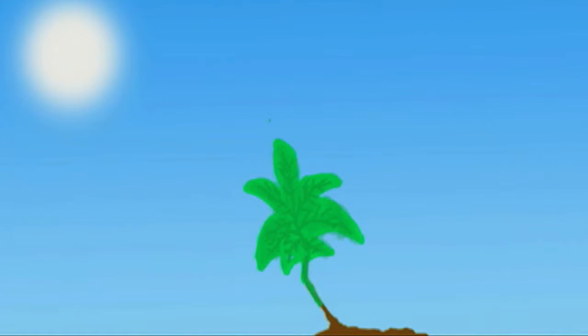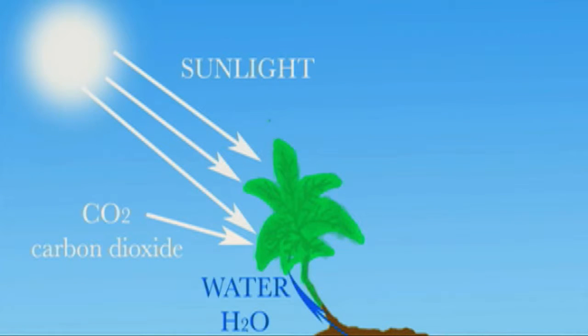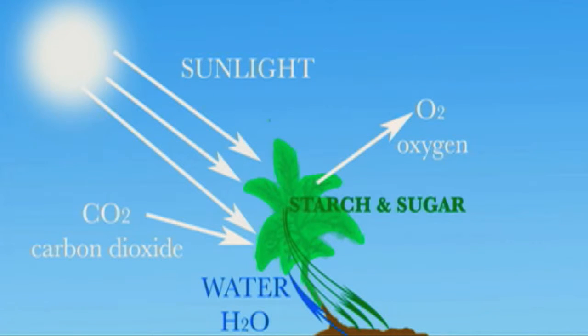Sunlight reacts with water and carbon dioxide in cells of plants to make the food for the plant, with an end product being oxygen. This is called photosynthesis.